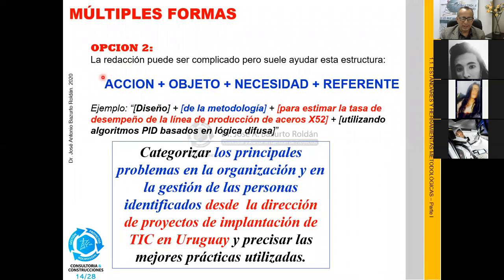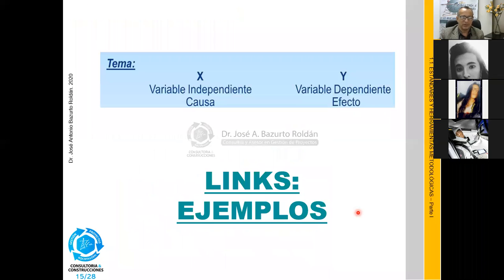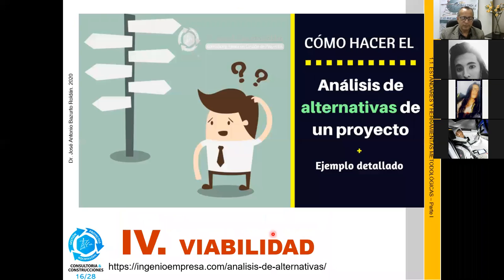La opción 2 es construir el título con: acción, objeto, necesidad y referente. Ejemplo: diseño de metodología para estimar la tasa de desempeño de la producción de acero, utilizando algoritmos PIR basado en lógica difusa. Otro ejemplo: categorizar los problemas principales de la organización desde la dirección de implantación de TIC en Uruguay, para precisar las prácticas utilizadas. Es otra manera de poner títulos, aunque sale bastante extenso. Con este enlace pueden ver muchos más ejemplos.